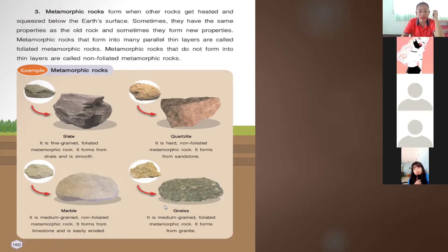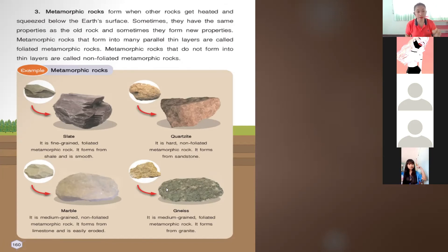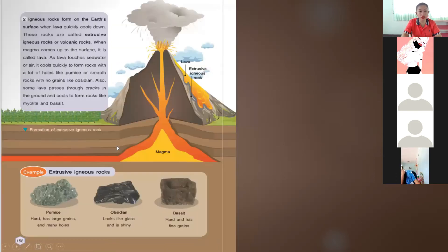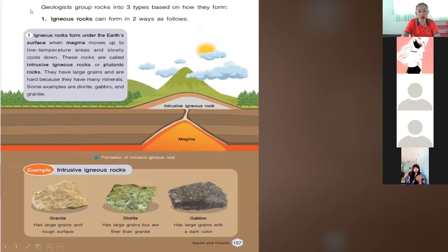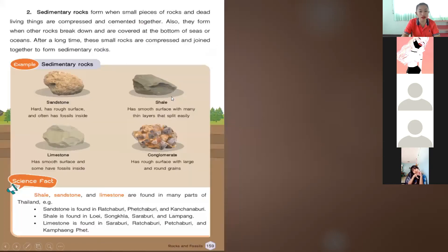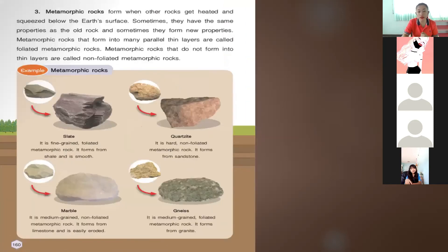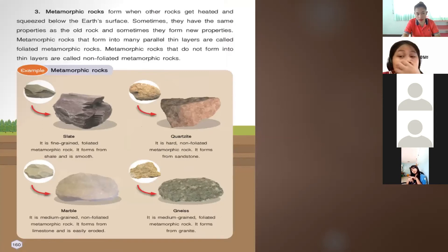Granite is found in igneous rocks. So granite helps form gneiss. These are the types of rocks we have. Let's do a quick review: we have igneous rocks, which form in two ways — intrusive igneous rock and extrusive igneous rock. The second type is sedimentary rocks, and the third type is metamorphic rocks.